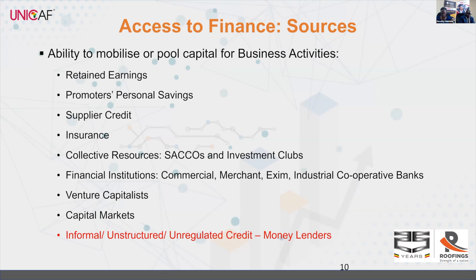Another source is retained earnings — the money you make that goes back into the business. It's a good, cheap source of financing because it's generated within the business itself. It demonstrates to potential financiers that the business can earn money and recoup growth, giving you a platform for future sources of financing, including friends, financial institutions, or capital markets.